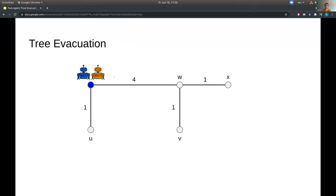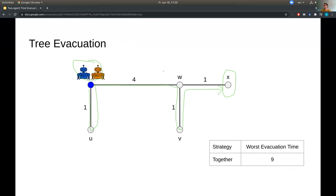So for the simple example, one strategy could be for the robots to simply stay together and explore the graph something like this, down to u, then along to w, down to v, and to x. And this takes a total of 1, 2, 6, 7, 8, 9. So in the worst case, the exit is at x, and the evacuation time will be 9.